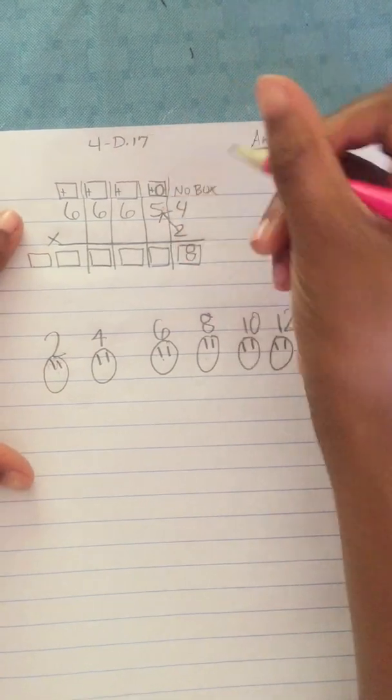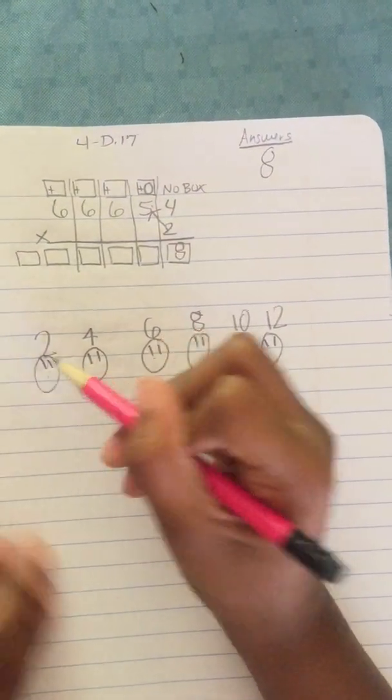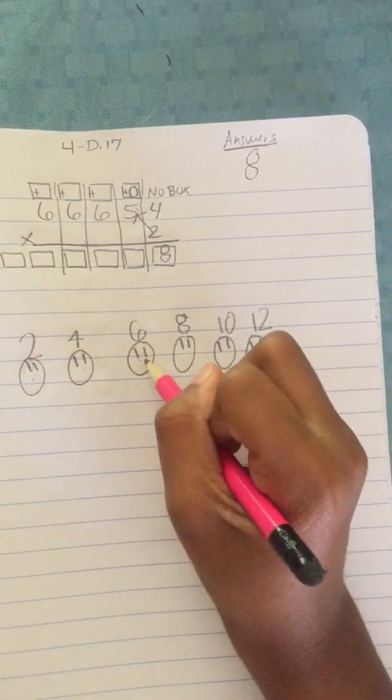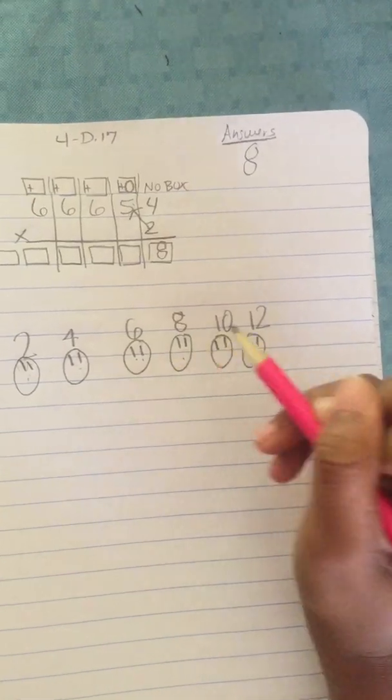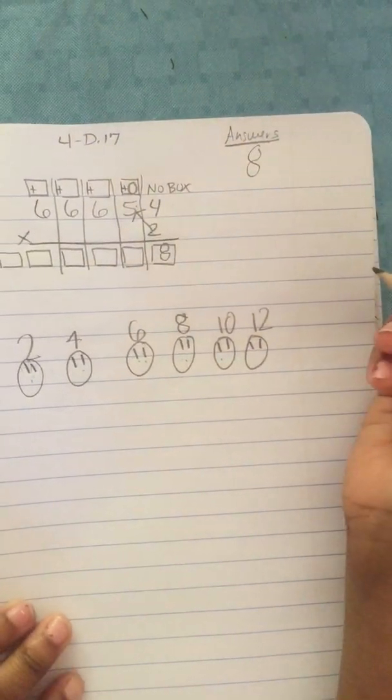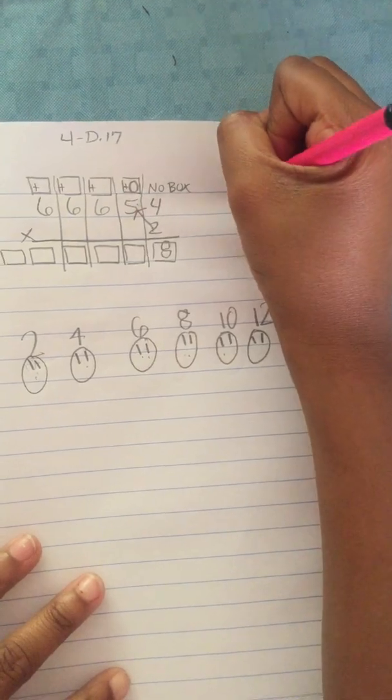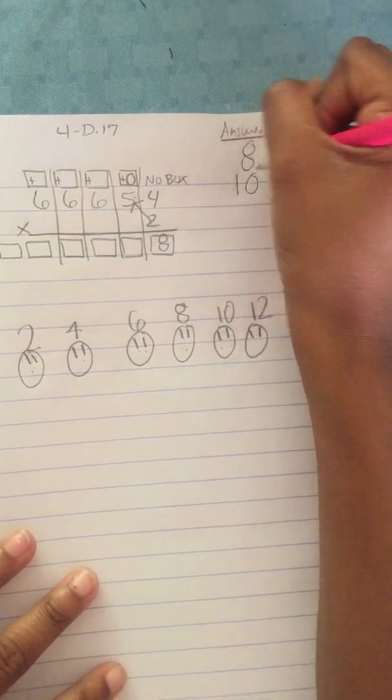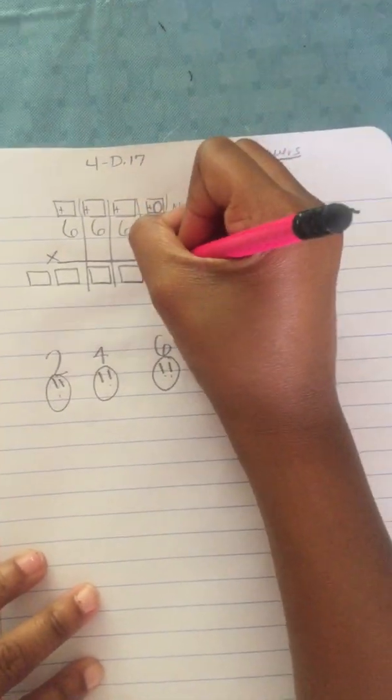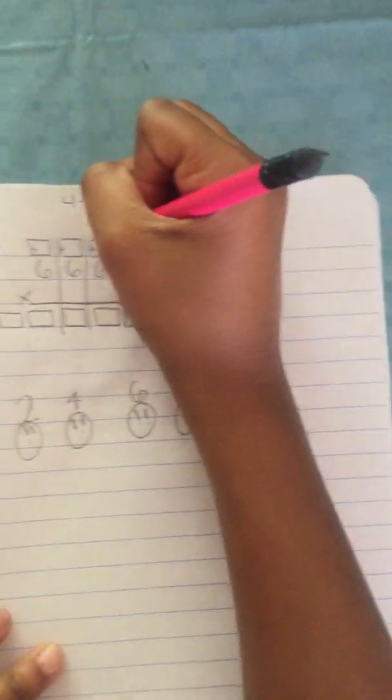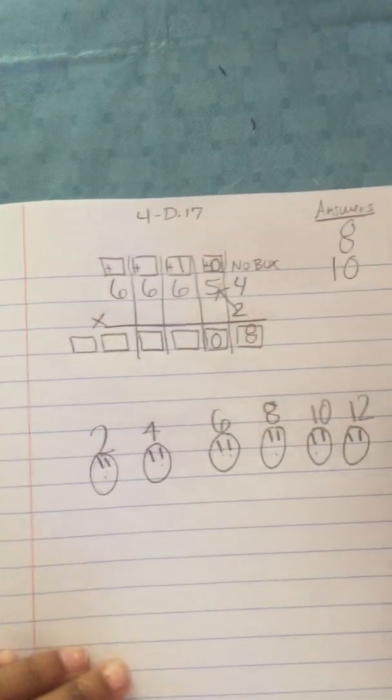And two times five is two times one, two times two, two times three, two times four, and two times five. And two times five is ten. So I'll put a ten here. And I have to borrow something. So I'll put the zero in this box and the one in here. And I have to carry the one here.